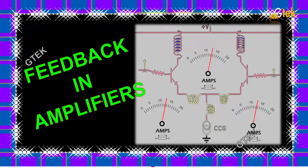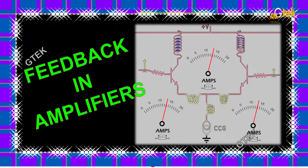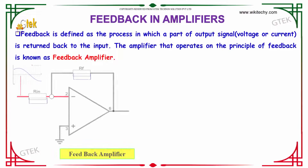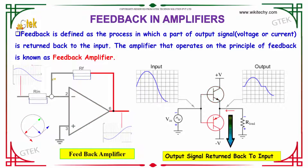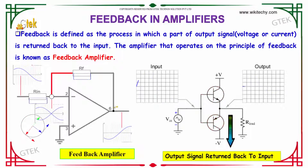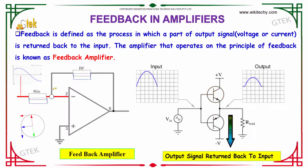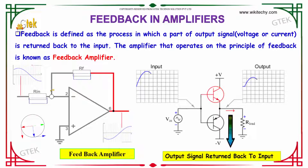We will talk about feedback in amplifiers. What is feedback? It's really simple. Once we get the output, it will be given as feedback. Feedback is defined as the process in which a part of the output signal is written back to the input. The amplifier that operates on the principle of feedback is referred to as a feedback amplifier.